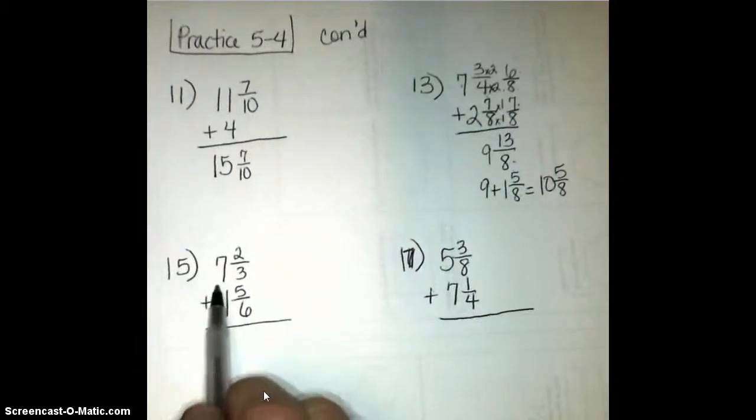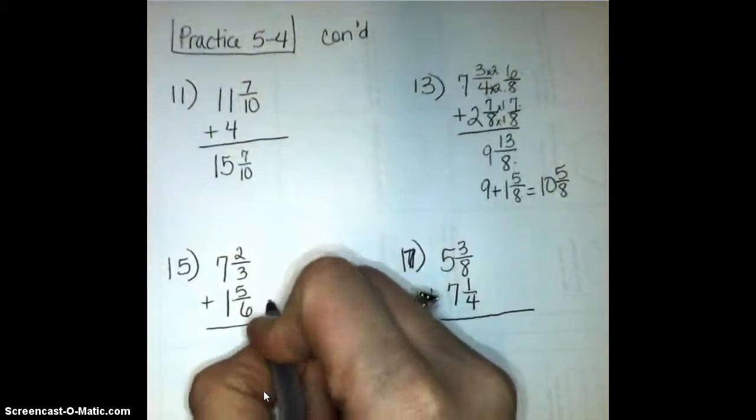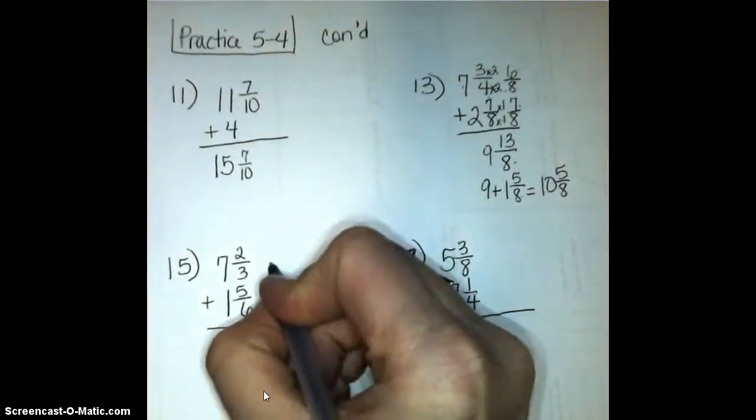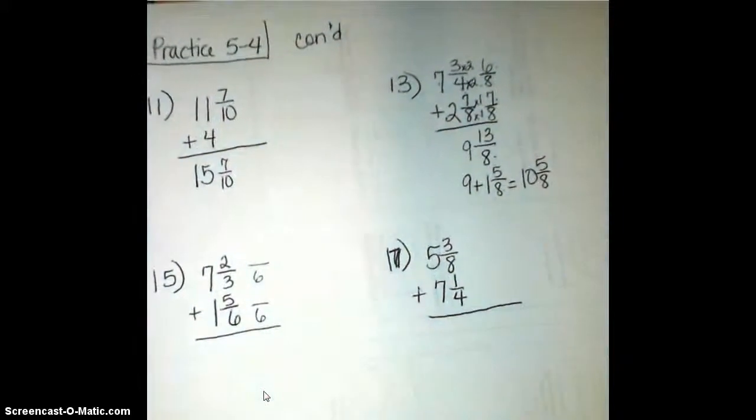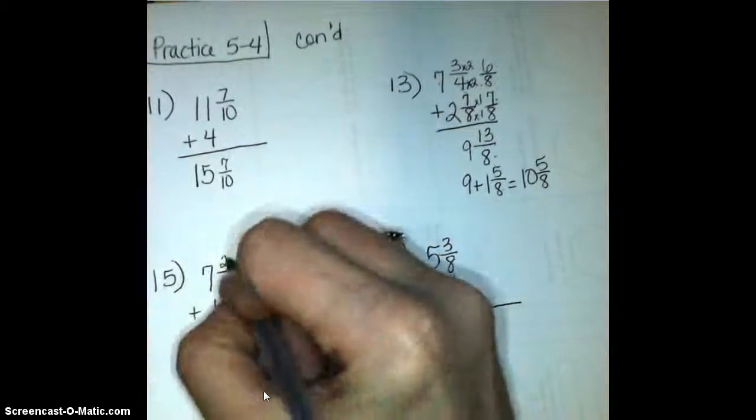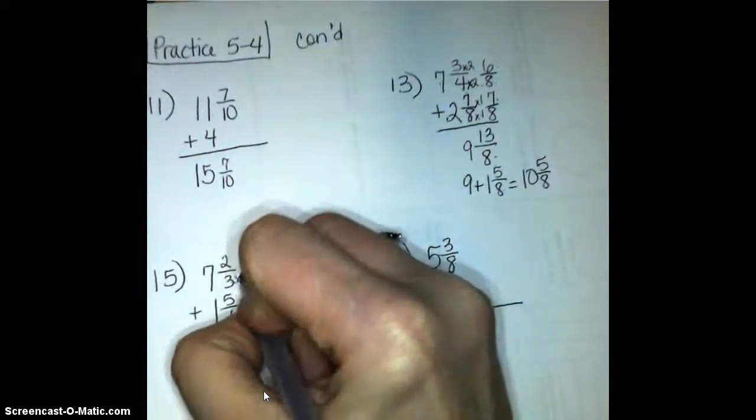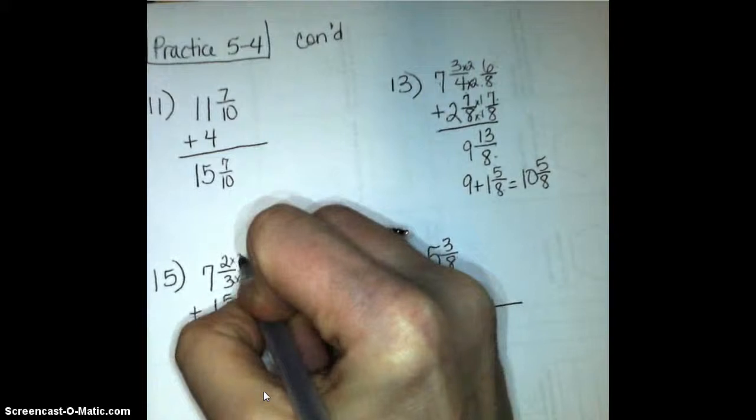Number 15, 7 and 2 thirds plus 1 and 5 sixths. Looking at my denominators, I have thirds and sixths. My LCD is 6. When I think about multiples of 3 and multiples of 6, my LCD or my least common denominator is 6. So 5 sixths is going to stay the same as 5 sixths. 2 thirds, I'm going to cut those thirds to make 6. I'm going to cut each of those thirds into 2 pieces.